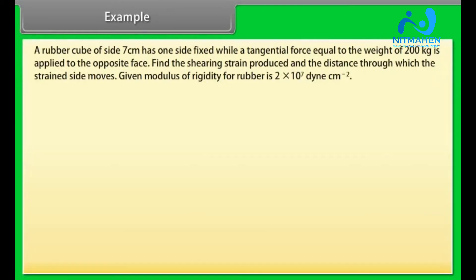Example. Let's take an example of elastic moduli. A rubber cube of side 7 cm has one side fixed while a tangential force equal to the weight of 200 kg is applied to the opposite face. Find the shearing strain produced and the distance through which the strained side moves. Given modulus of rigidity for rubber is 2 × 10⁷ dyne per centimeter square.